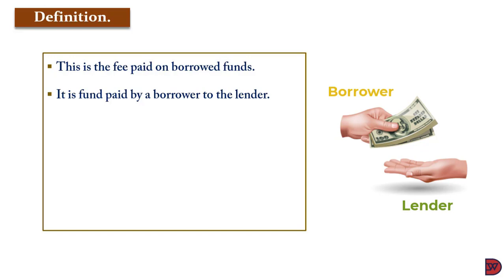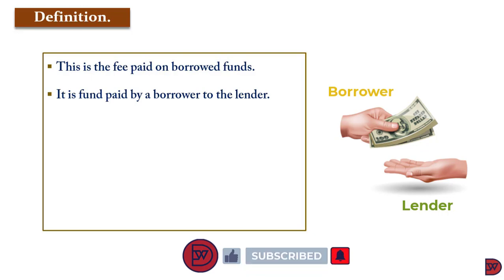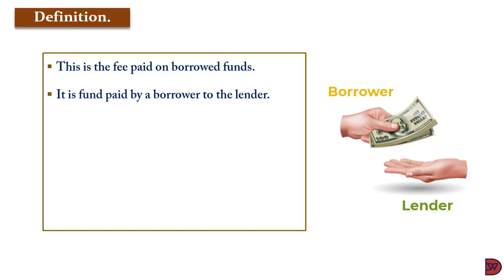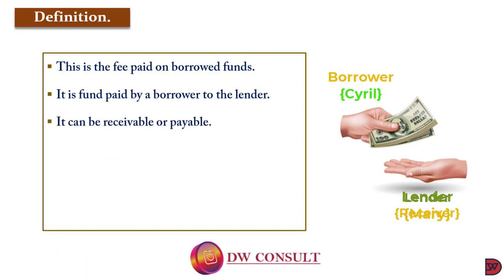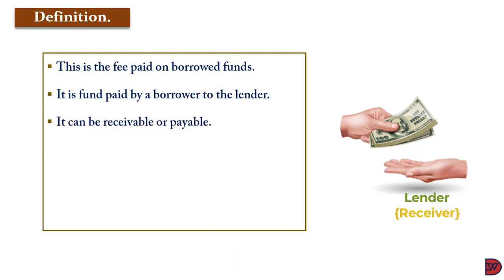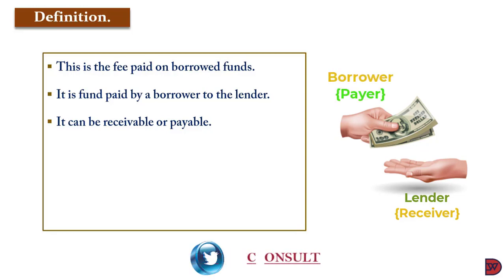So if Mary lends Cyril $100,000, the fee that Mary will charge Cyril for having her $100,000 to work with will be the interest. It will normally come from Cyril, who is the borrower, to Mary, the lender. Whilst the lender is receiving it from the borrower, the borrower is paying it to the lender.